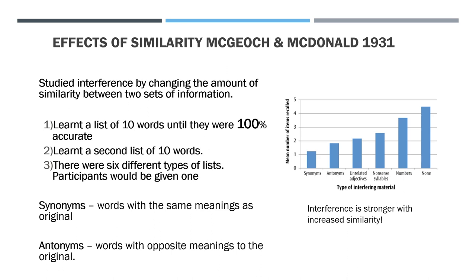Synonyms are words with the same meanings as the original — so the original might include 'huge' and the new list might include 'gigantic'. Antonyms are words with opposite meanings — so if the first list was 'huge, massive, great', the second list might be 'tiny, minute, small'. The findings shown in the graph indicate it was very difficult for participants to recall the new list if they were synonyms — similar to the original. But it was much easier if they were numbers or if there was no second list, which was the control. So interference is stronger with increased similarity of words. This was a lab experiment.